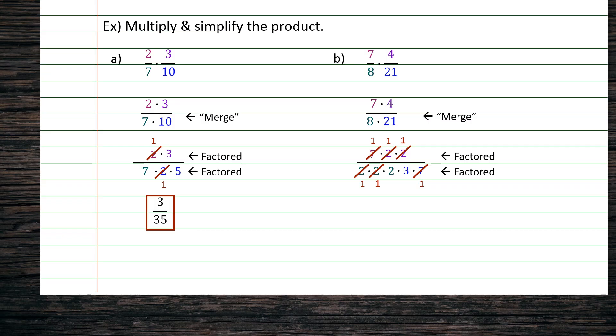Now be very careful. Although we reduced the values in the numerator, the values did not disappear. Instead, a 1 is in their place. So for the numerator, we have 1 times 1 times 1, and in the denominator, we have 2 times 3, ultimately giving us an answer of 1 over 6.